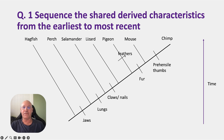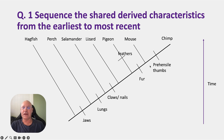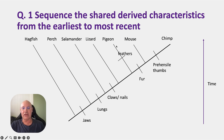Why aren't feathers included? Because feathers are not a shared derived characteristic — they appear on a side branch for birds, but the species that come after that don't have feathers. That's why feathers appear on a separate branch rather than on the main line.